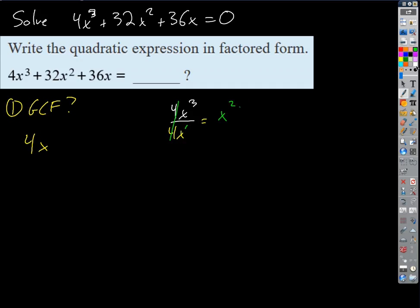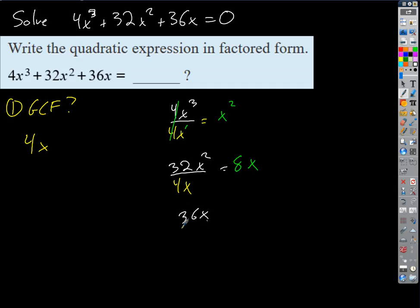What about the next term? 32x² divided by 4x: 32 ÷ 4 = 8, and x² ÷ x = x, so we're left with 8x. Last one: 36x divided by 4x — just 9, because the x's cancel and 36 ÷ 4 = 9.